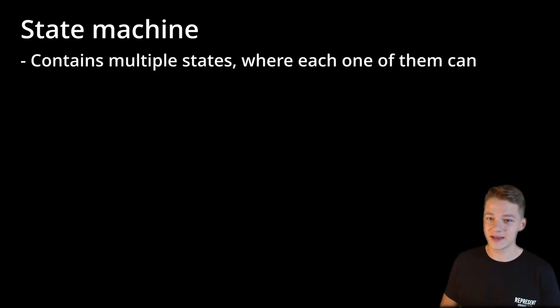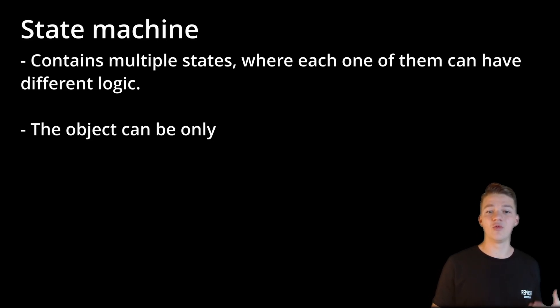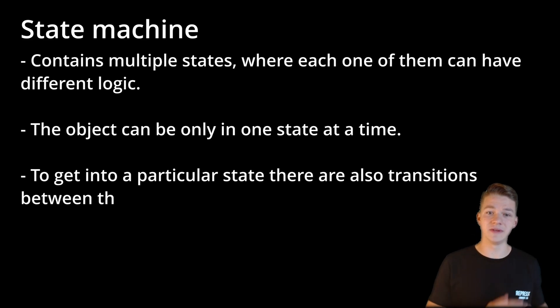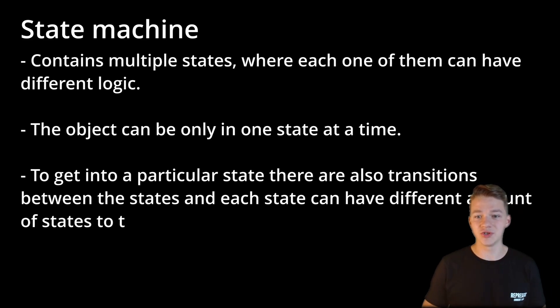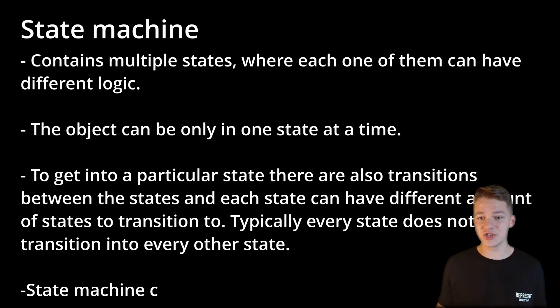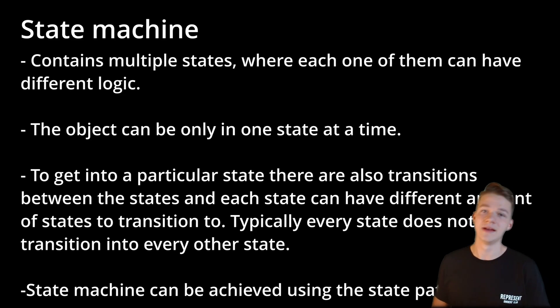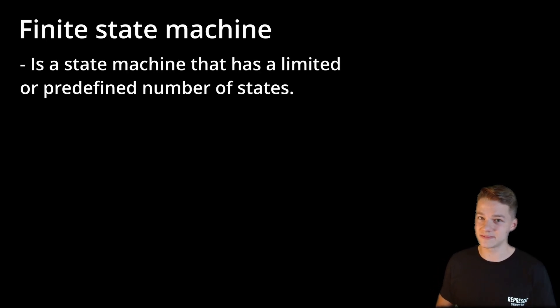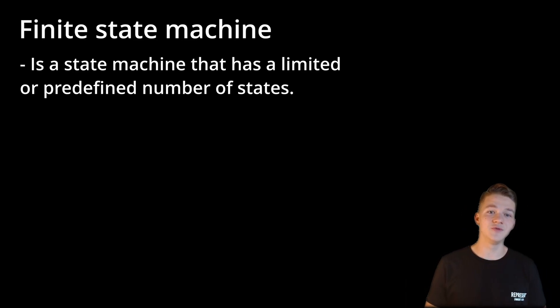Another term that sounds fancy but is actually simple is the state machine, which contains multiple states where each one can have different logic. The object can only be in one state at a time, and there are transitions between these states — each state can have a different number of states to transition to. Typically, every state does not transition into every other state. The state machine can be achieved using the state pattern. A finite state machine is simply a state machine with a limited or predefined number of states, and that is what we'll be creating here for the enemies.